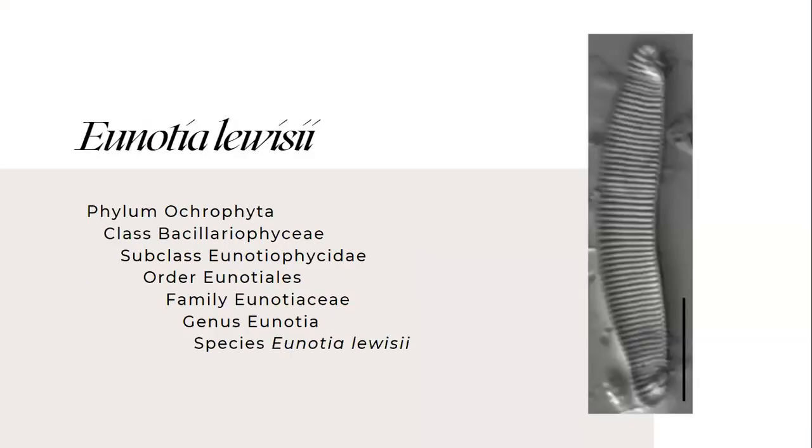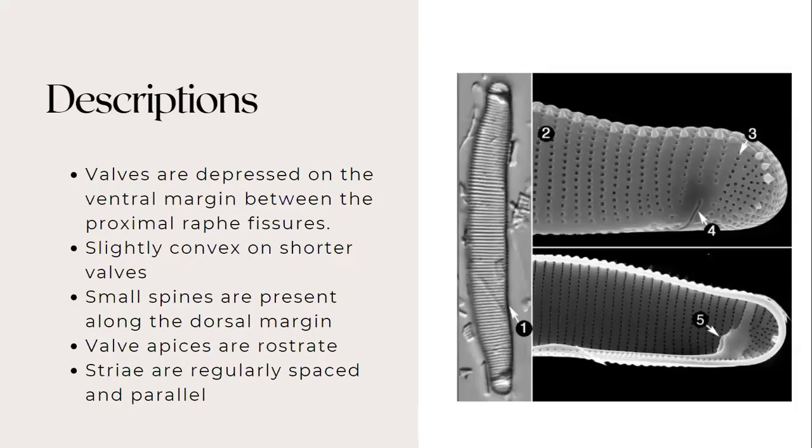The next species is Eunophora. This species belongs to the family Eunotiaceae. For its description, valves are depressed on the ventral margin between the proximal raphe fissures, slightly convex on shorter valves. Small spines are present along the dorsal margin and valve apices are rostrate. The striae are regularly spaced and parallel.